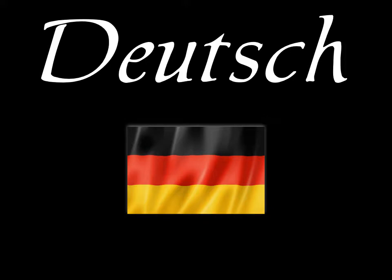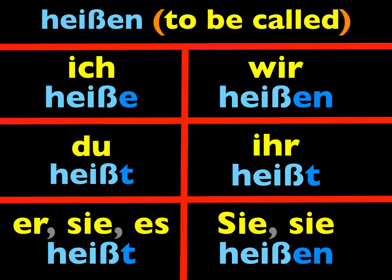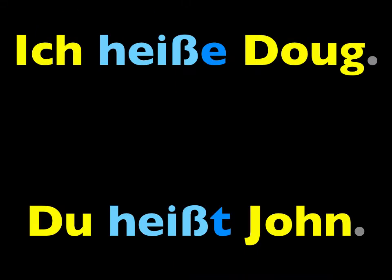Let's learn more about names today. In the last lesson, we learned that the verb heißen is used to talk about names. For example, ich heiße Doug — my name is Doug. Literally, I'm called Doug.